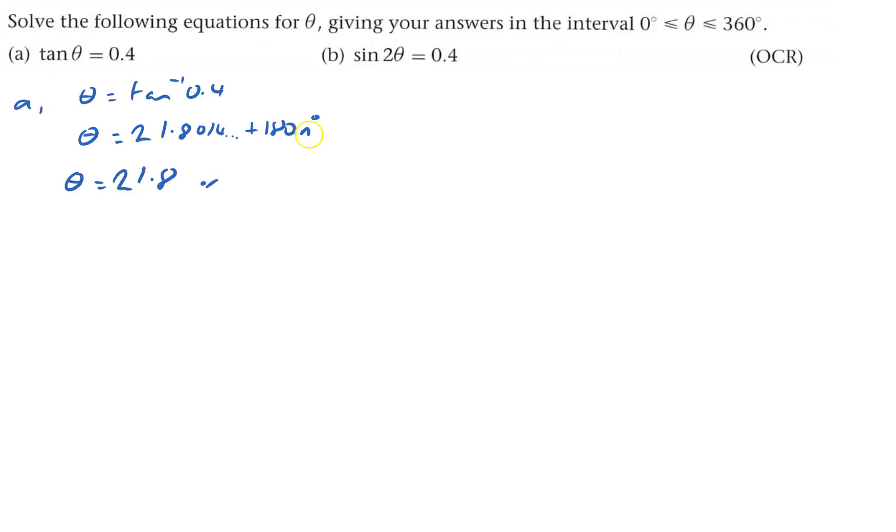So theta could be 21.8. Or it could be, if n's 1, it could be 180 plus that, which is 201.8 degrees. If n were 2, that would be 360, that would be 381. And it can't be because it's got to be less than or equal to 360. So that's that one done.